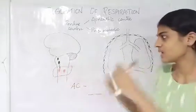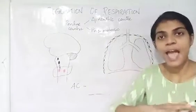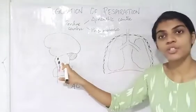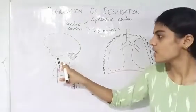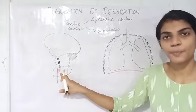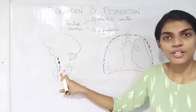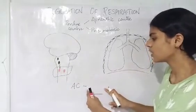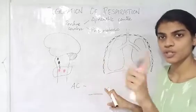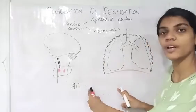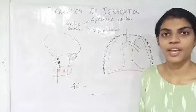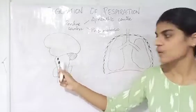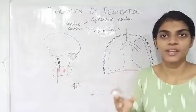The apneustic center does not have a direct effect on the respiratory muscles; it acts through the dorsal respiratory group of neurons. It has a direct connection with the dorsal respiratory group, so it provides stimulation to that group, causing it to work more actively and increasing the depth of inspiration beyond the normal two seconds. That is the function of the apneustic center.